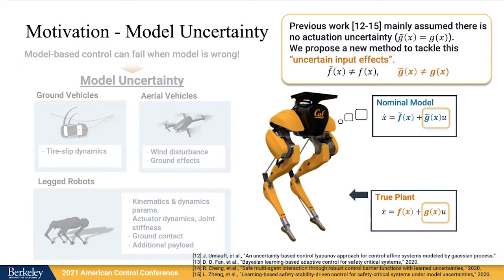Previous work that deals with model uncertainty with data-driven approaches mostly assumed that there is no actuation uncertainty. In other words, they assumed g-tilde equals g. However, for many control systems, uncertain input effects are prevalent. For example, in a mechanical system, uncertainty in the inertia matrix directly induces such uncertain input effects. Our main contribution is that we propose a new method to tackle these uncertain input effects. Therefore, we deal with a setting where both f-tilde and g-tilde can differ from f and g respectively.